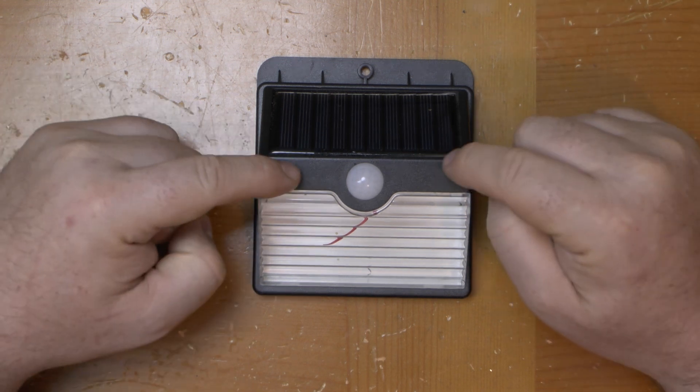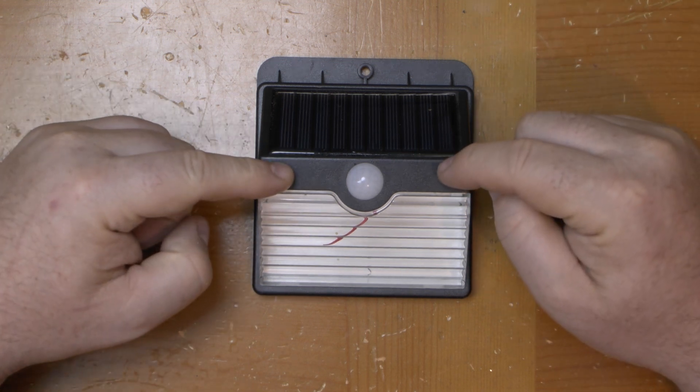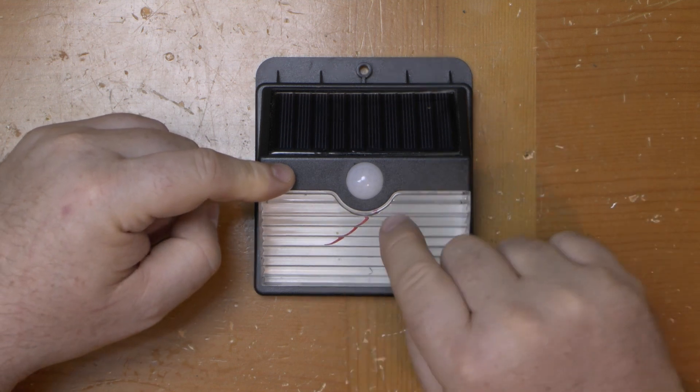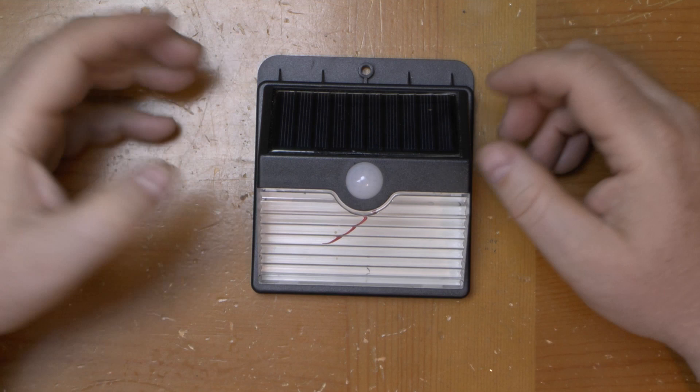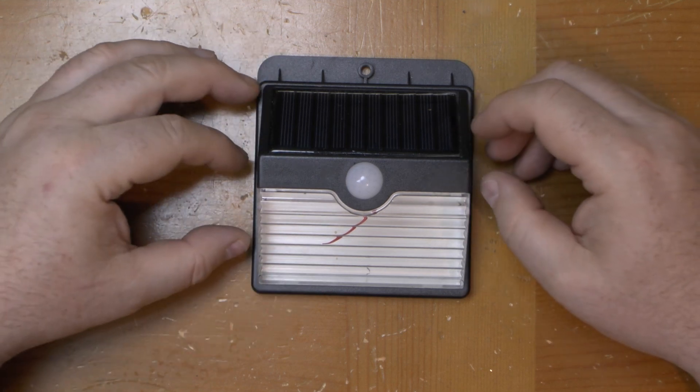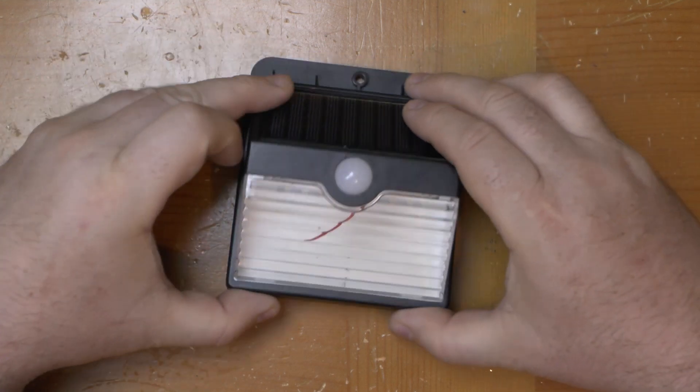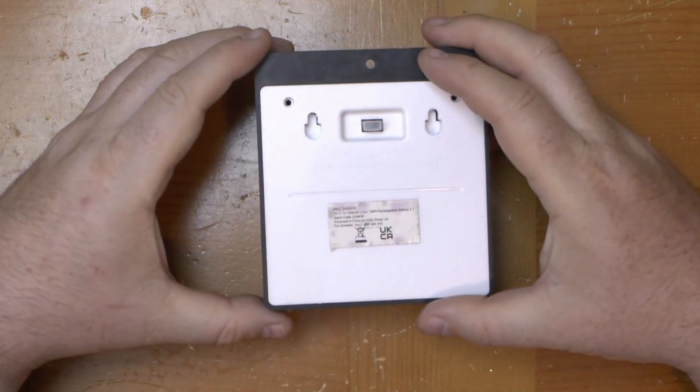Greetings, I've been given this solar light to try and fix. It should be a straightforward fix - you can see the fault there, the wires came off. Rather than just fix it, I'll do a teardown, see how it ticks, and put it up on YouTube.